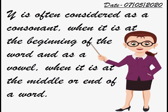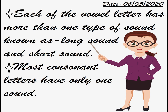In the next line, if you have space you can continue, or go to the next page. Put the date again and write this important point: 'Each of the vowel letters has more than one type of sound, known as long sound and short sound.' Each of the vowel letters — A, E, I, O, U — all have more than one type of sound, that is two, three and so on. Every vowel has a long sound and a short sound.